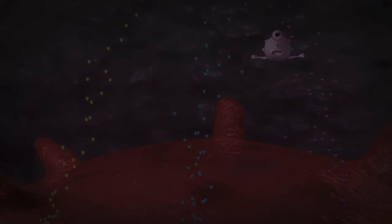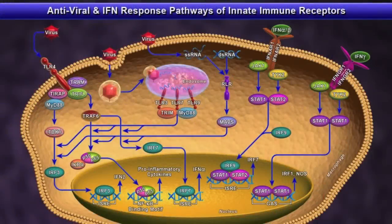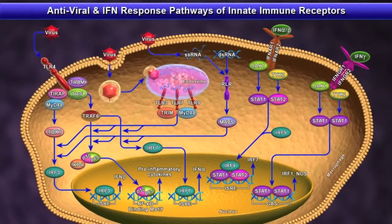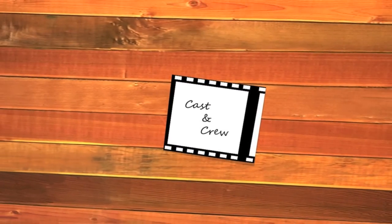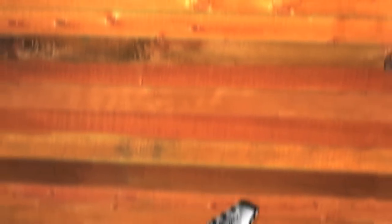To summarize, TLRs, RLRs, and NLRs are three key innate immune receptor families important for initiating antiviral immune responses through a series of signaling molecules and adapter molecules. This molecular cast and crew are shown in the credits that follow.